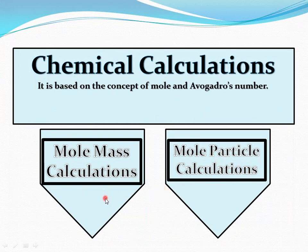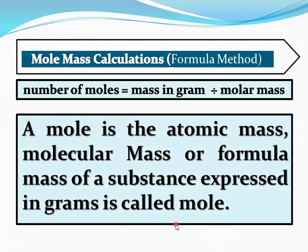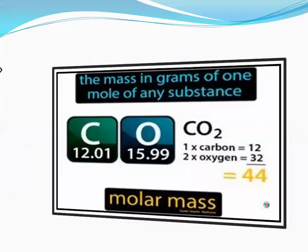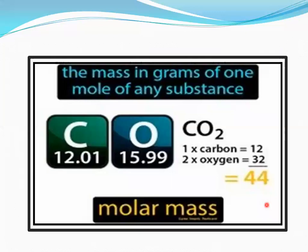In mole-mass calculation we use molar mass as a constant. A mole is the atomic mass, molecular mass, or formula mass of a substance expressed in grams. For example, the mass in grams of one mole of carbon dioxide: the atomic mass of carbon is 12 and oxygen is 16. There are two oxygen atoms in a carbon dioxide molecule. One carbon gives 12 grams, two oxygens give 16 × 2 = 32 grams. Adding them: 44 grams per mole.